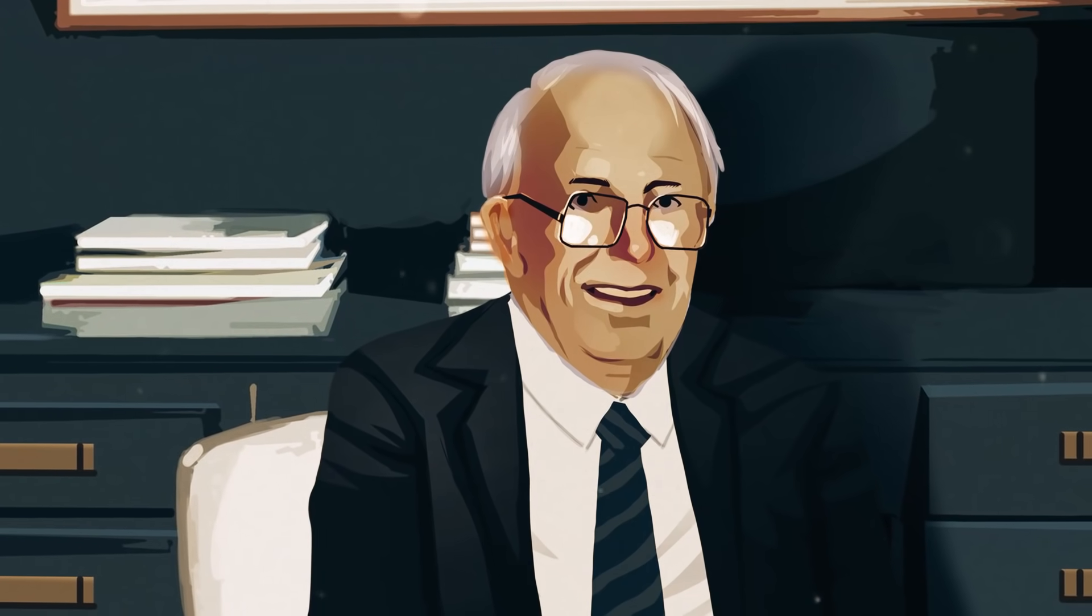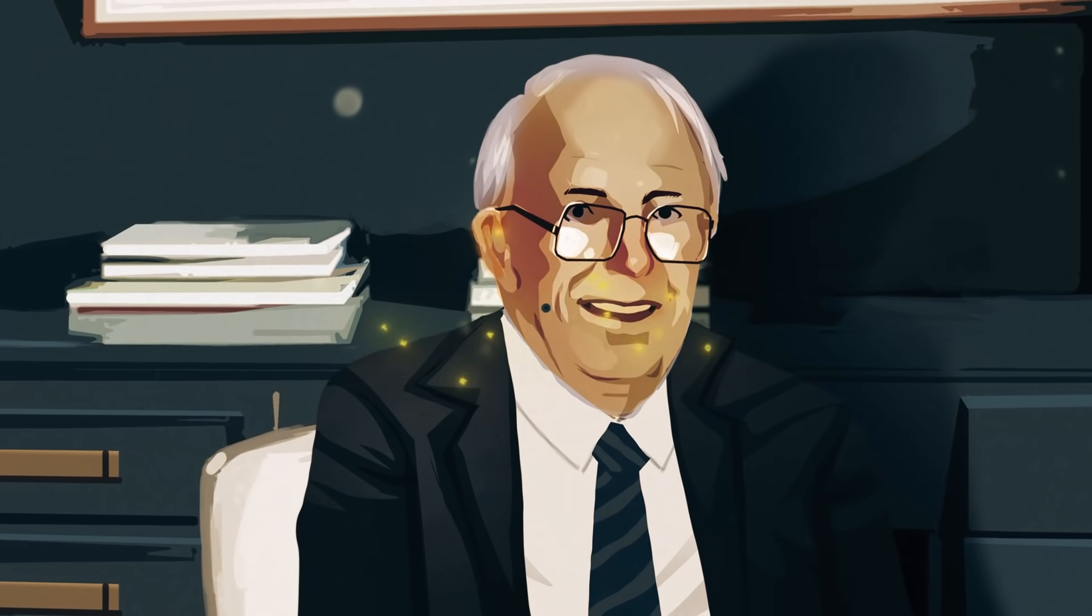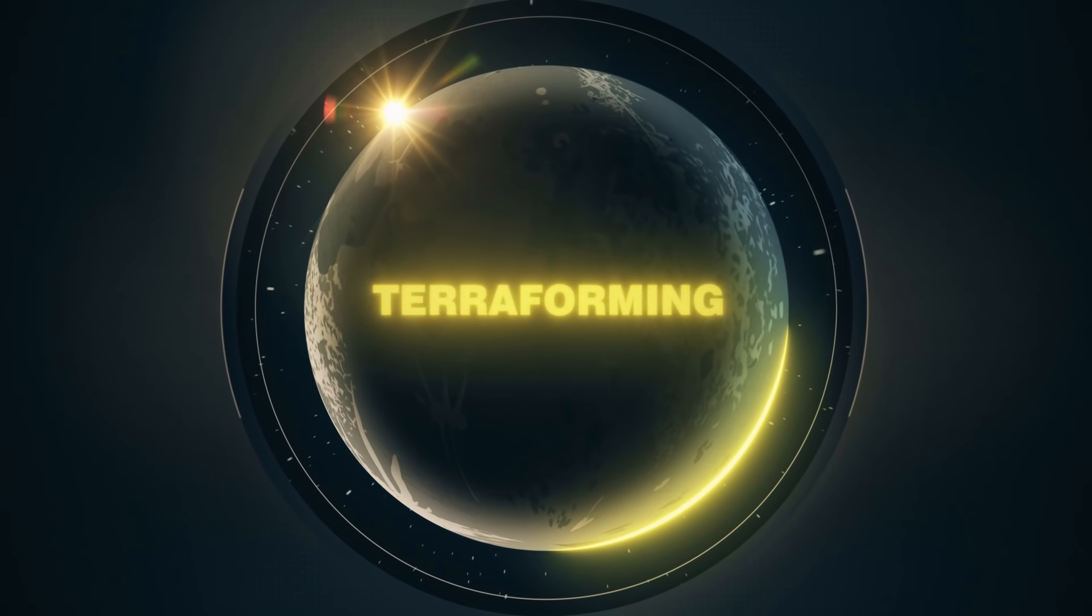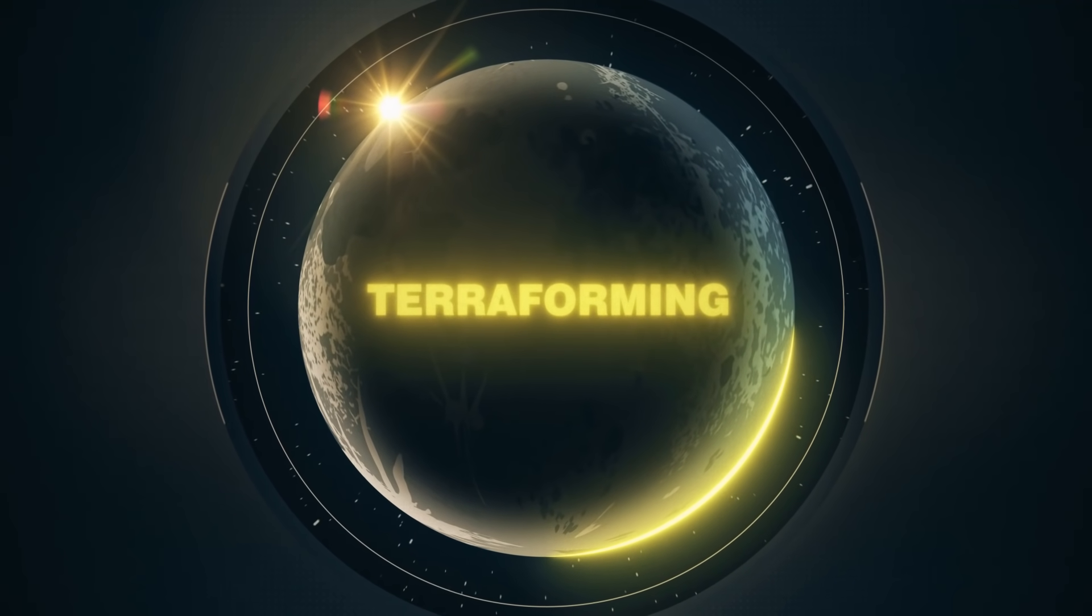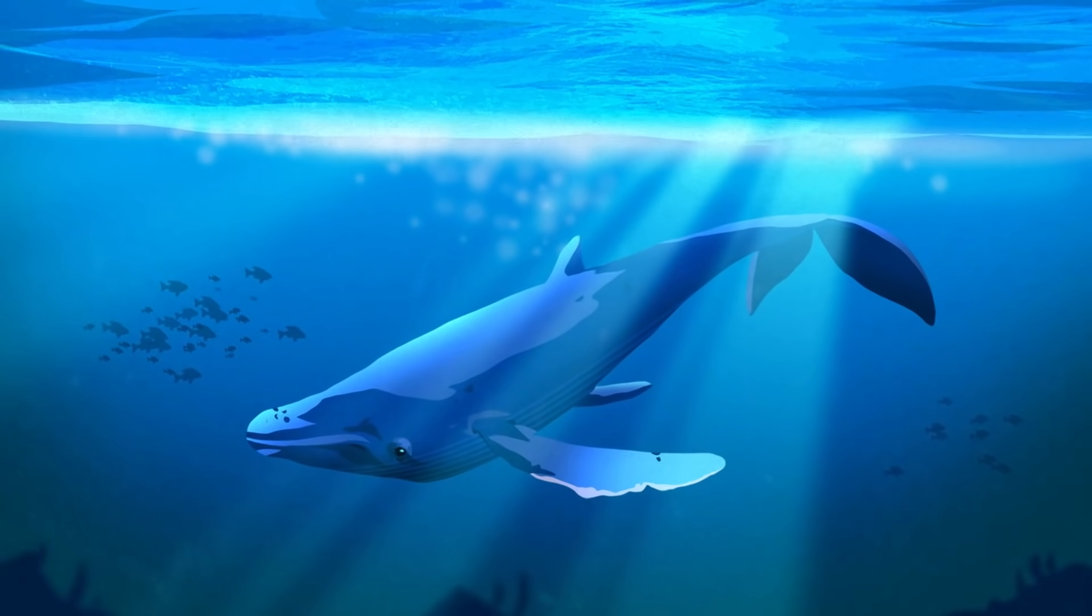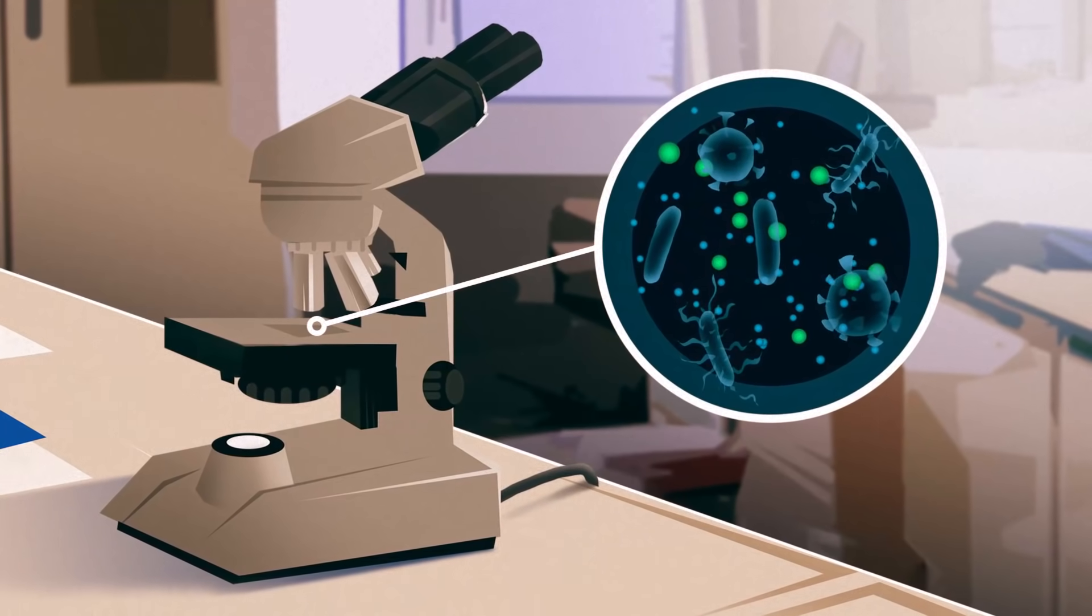In the 1940s author Jack Williamson coined the term terraforming. To terraform is to create an ecosystem that supports living organisms, from large complicated vertebrates to simple unicellular bacteria.